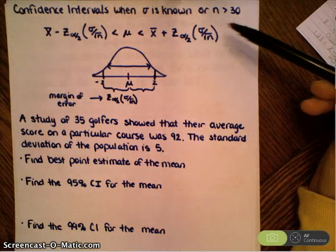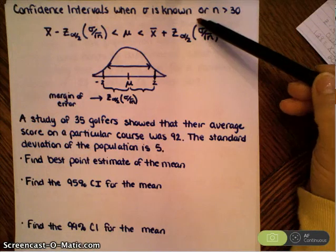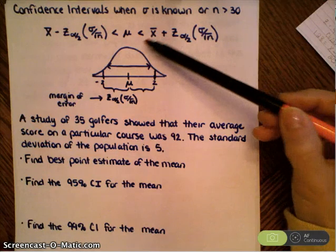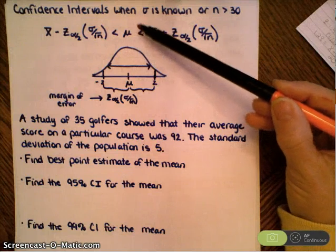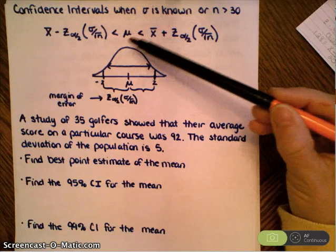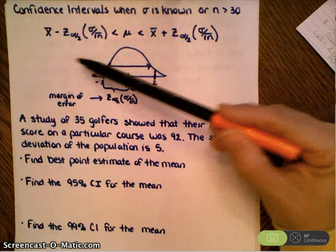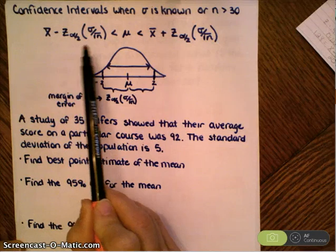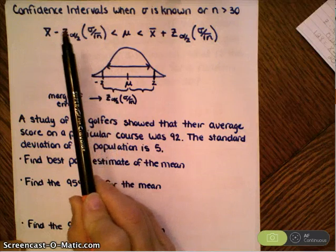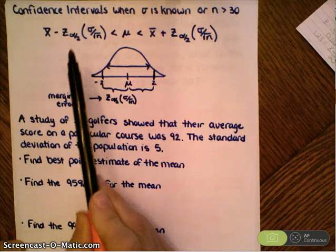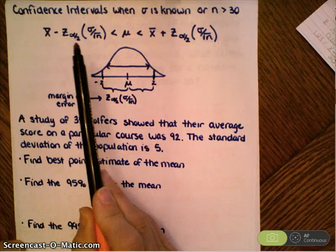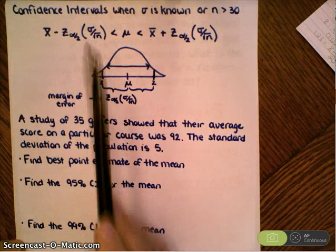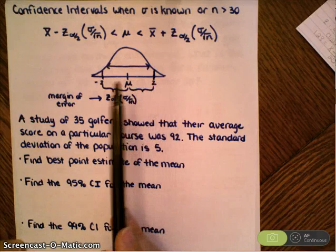Finding confidence intervals when we know the population standard deviation or our sample size is greater than 30. We are given an interval estimate of the population mean by taking a sample. Here's our sample mean, the x-bar, and we're adding and subtracting a margin of error, giving me an interval range here.